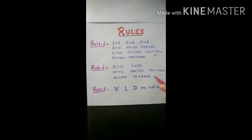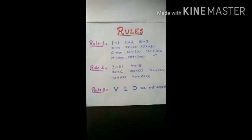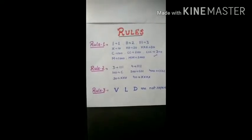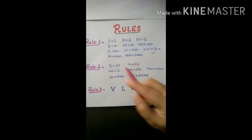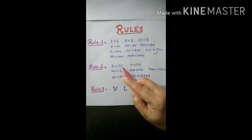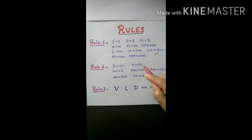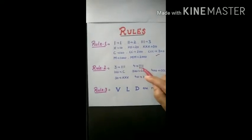Now, second rule. Remember, a single symbol cannot be repeated more than 3 times. Now, see through example. For 3 we write three times I. But for 4 we cannot write four times I.